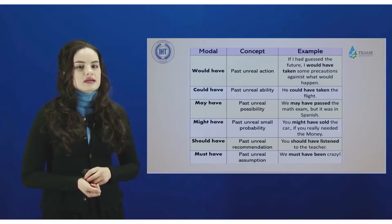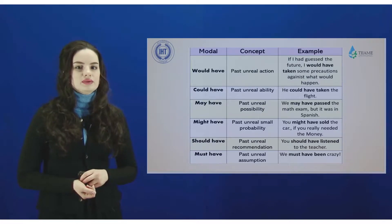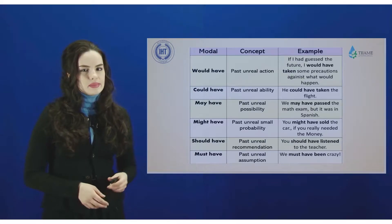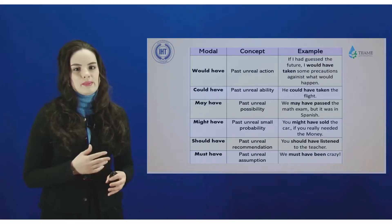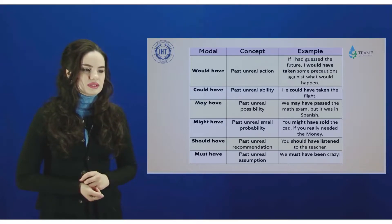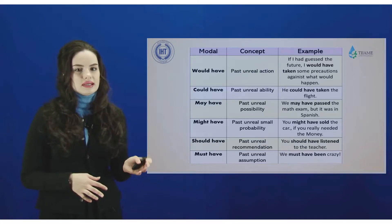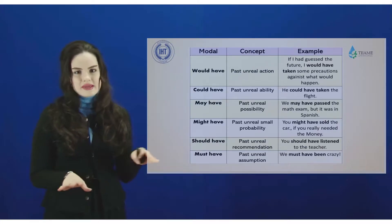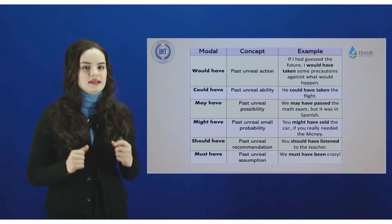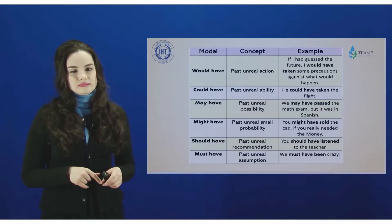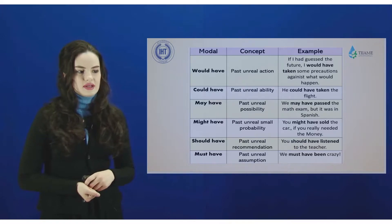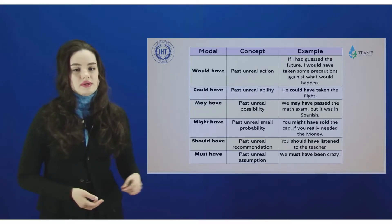Could have — similar to the first one, but here you talk in a more general way about some things. May have is like possibility — you imagine that something could happen in a slightly different way. Might have — past unreal and an absolutely small probability, almost never. Should have is like a recommendation that could have been organized in the past, but you didn't follow it. And must have — some assumption that also could be in the past.